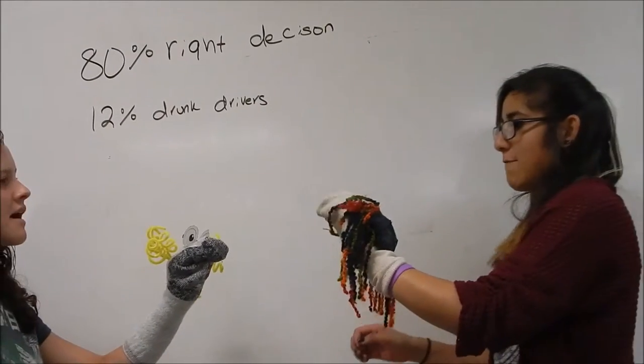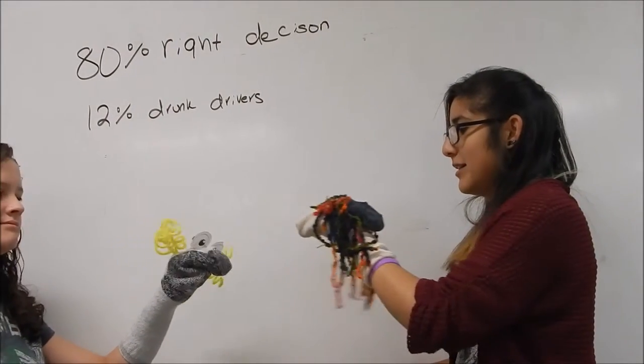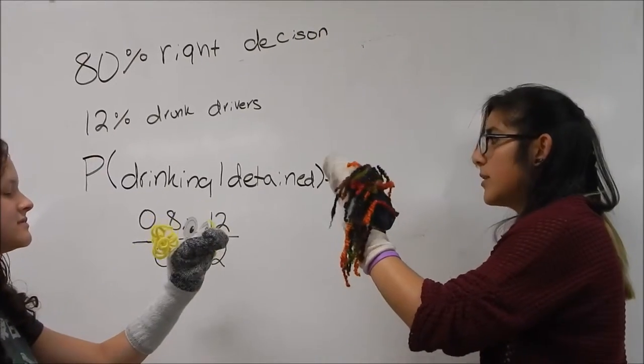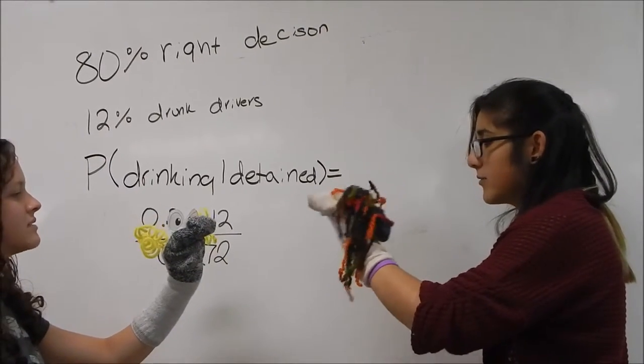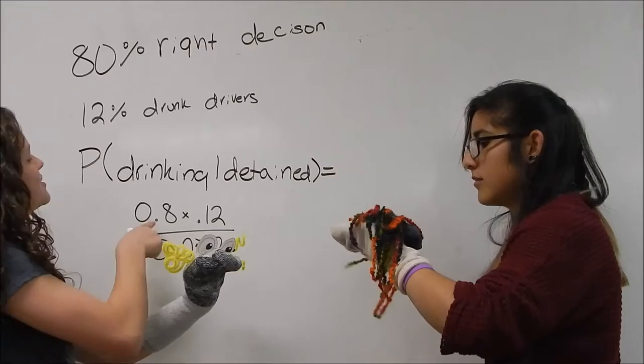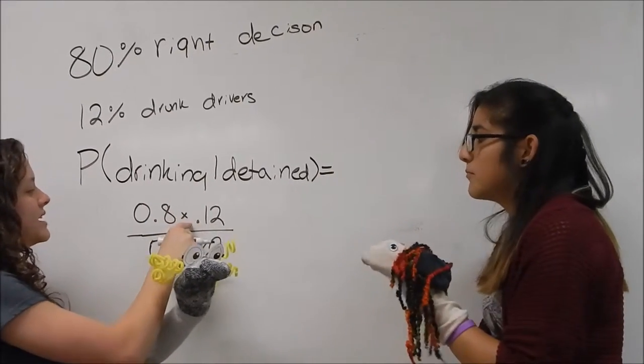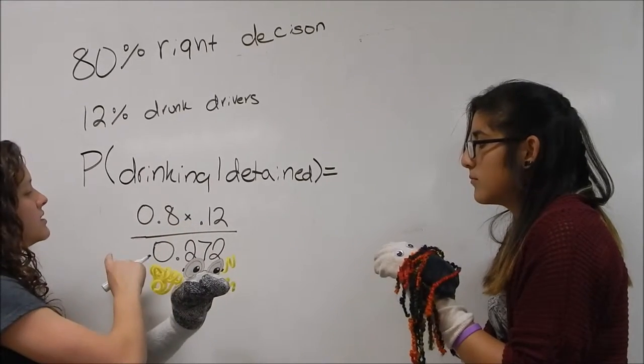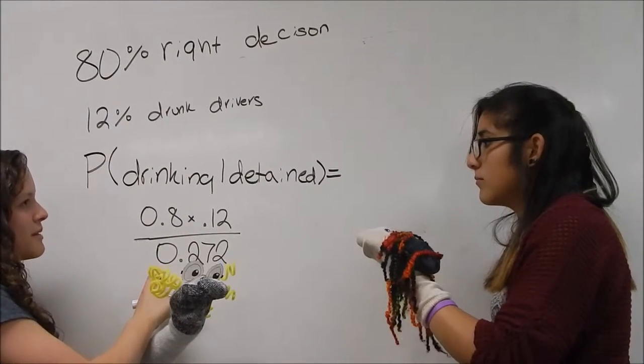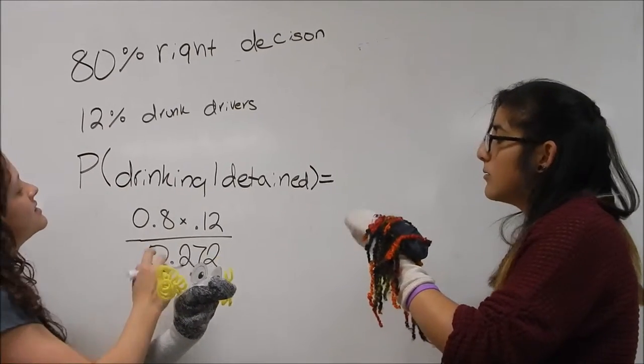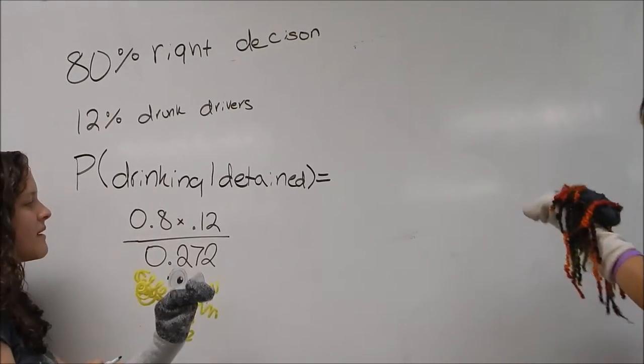So let's say I've been drinking, but of course I hadn't been. What's the probability that I would be detained? This is showing the probability that I was drinking given that I was detained. Correct. So this is the probability of the right decision multiplied by the probability of being a drunk driver, divided by the probability that any given driver will be detained. Let's do the math.